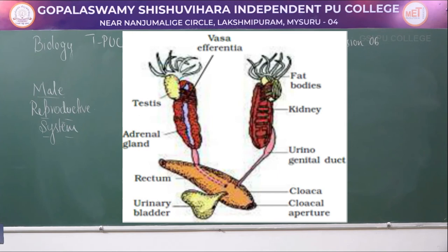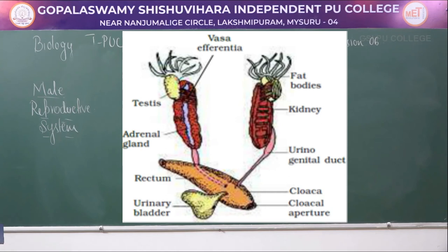To summarize the male reproductive system: it contains a pair of ovoid yellow-colored testes attached to the upper part of the kidney with a double fold of peritoneum called mesorchium. The vas deferentia, 10 to 12 in number, arise from the testes and open into the sides of the kidney, then into Bidder's gland, which communicates with the urinogenital duct opening into the cloaca. The cloaca is a median chamber used for removing fecal matter, urine, and sperms.